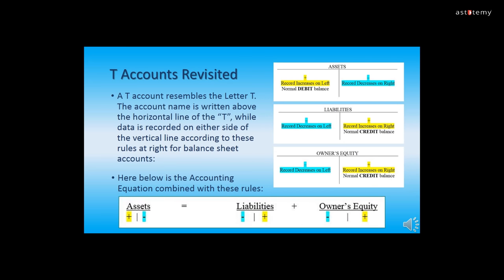Here we revisit T-Accounts. A T-Account is exactly that — it's an account that resembles the letter T. The account name is written above the horizontal line of the T, while data is recorded on either side of the vertical line according to the rules for balance sheet accounts. Hopefully by now you are starting to understand which have normal debit balances and which have normal credit balances. Below is the accounting equation combined with these rules, and on the next slide we add the income statement accounts.